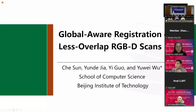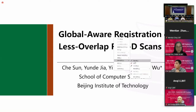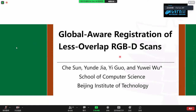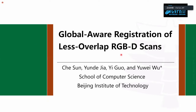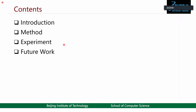Thank you for the introduction. Hello everyone, I'm glad to present our work. This work has been published at CVPR 2022. My name is Chua Sun, a PhD candidate at Beijing Institute of Technology. The title of this work is Registration of Less Overlap RGBD Scans. First, I will introduce the background of global aware registration. Next, I will illustrate the detailed method and show the experiment analysis. In the end, I will report the future work.